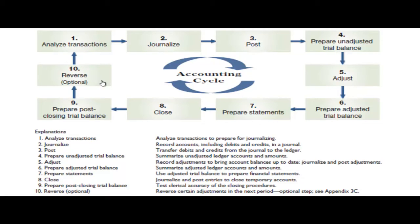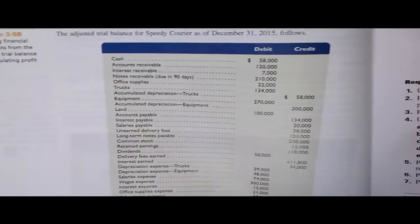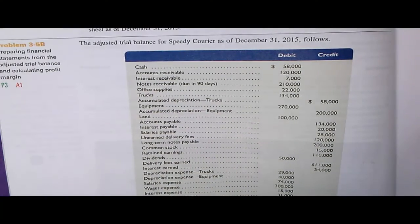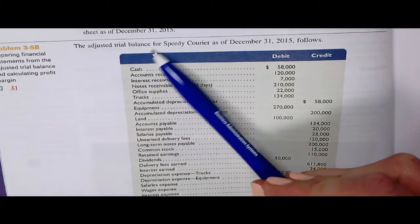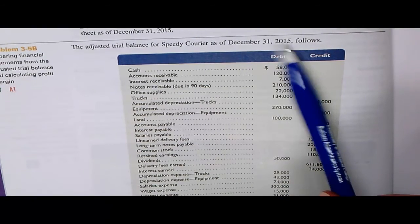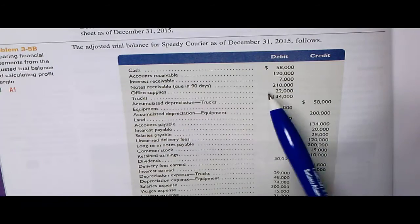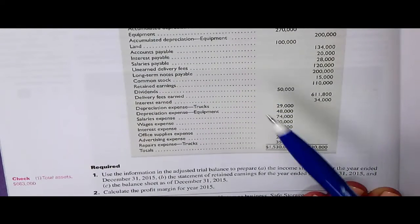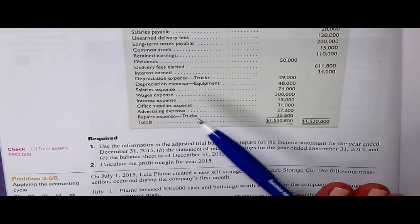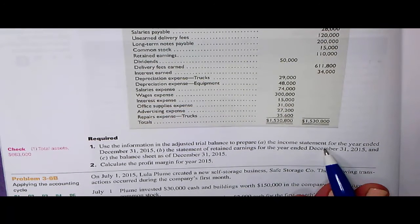And if needed, we can do some reversing of accounts for some accruals that we set up. But let's go back and just focus on Step 7 for right now. I have opened my textbook to problem 3-5B. I am going to look at an adjusted trial balance — meaning adjustments have already been made — for Speedy Courier as of December 31, 2015. This is just listing all the accounts and their balances, whether they're debits or credits, and matching that the total debits match the total credits. The problem tells us to use the information in the adjusted trial balance to prepare an income statement, statement of retained earnings, and a balance sheet. It also wants to know what the profit margin is for 2015.